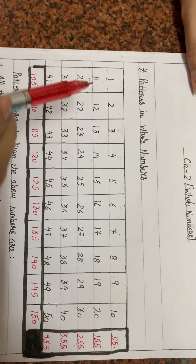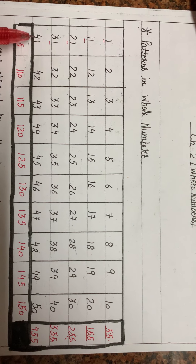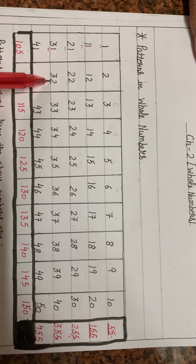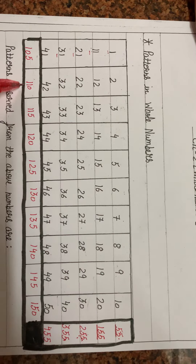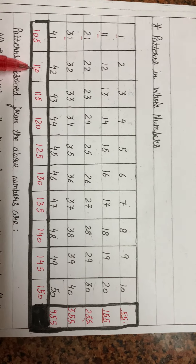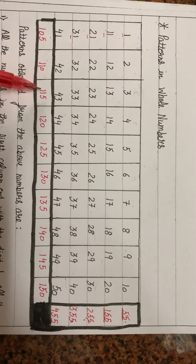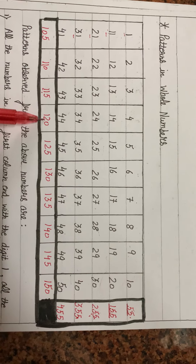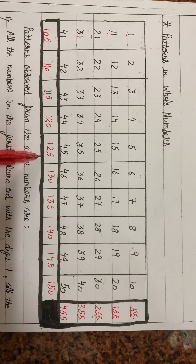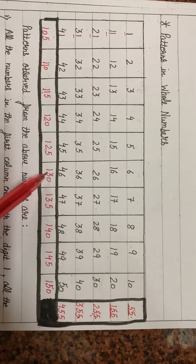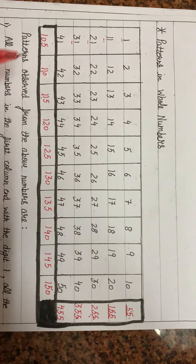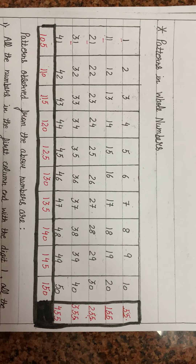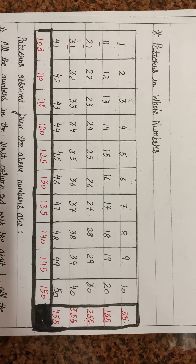If you add the first column: 1 plus 11 plus 21 plus 31 plus 41 comes out to be 105. The second column: 2 plus 12 plus 22 plus 32 plus 42 comes out to be 110. The gap between 105 and 110 is 5. The column sums continue: 115, 120, 125, and so on — each increasing by 5.